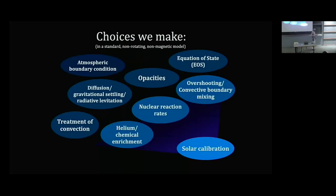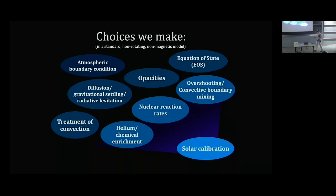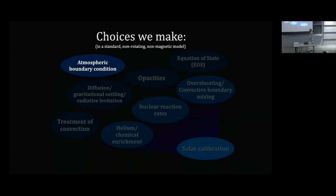Every time you run a stellar model you make choices whether you realize it or not. In something like MESA, which has beautiful default settings, even if you don't specify which nuclear reaction rates you want, one is chosen for you. Every evolution code incorporates these pieces. I'll step briefly through a bunch of them, lingering a bit longer on things we're less likely to touch in later discussions. Starting with boundary conditions: you have a system of differential equations subject to central and surface boundary conditions — the center is trivial, the surface is not.